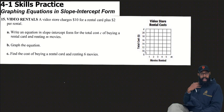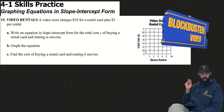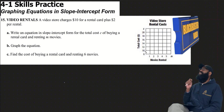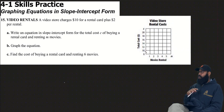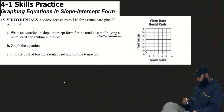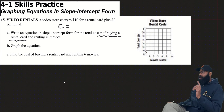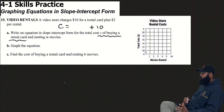Number 15 is video rentals. A video store charges $10 for a rental card plus $2 per rental. Part A: write an equation in slope-intercept form for the total cost C of buying a rental card and renting M movies.